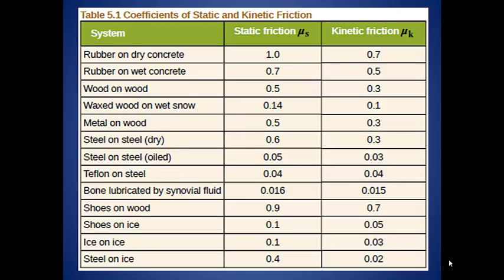Table 5-1 in your book gives a few different coefficients of static and kinetic friction. Take a look at the shoes on wood. The static coefficient is 0.9. That is pretty high and is actually what allows you to get your body moving when you take a step. Now look at the coefficient for shoes on ice. It is 0.1, which is significantly lower than the shoes on wood.